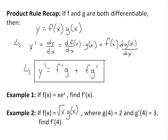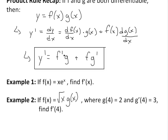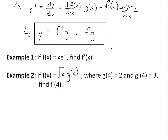Basically, the derivative is going to be equal to y prime, dy over dx, which equals the derivative of f of x times g of x, plus f of x times the derivative of g of x. Or you could write it as y prime equals f prime times g plus f times g prime.